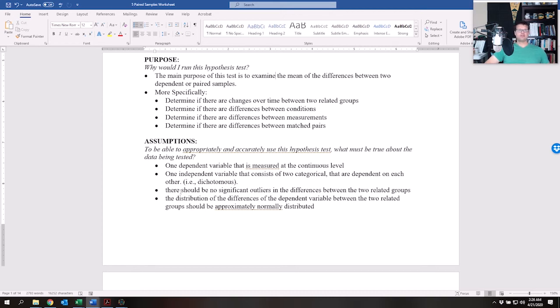And then one independent variable that consists of two categories that are dependent on each other, that are dichotomous. There should be no significant outliers in the difference between the two related groups. There can be outliers in the actual individual groups, but when you look at the difference scores, which we'll get into that in a little bit, the first thing that you've got to do is calculate the difference scores. When you've got the difference scores, there can't be outliers in the difference scores. And then the distribution of the differences of the dependent variable between the two related groups should be approximately normally distributed.